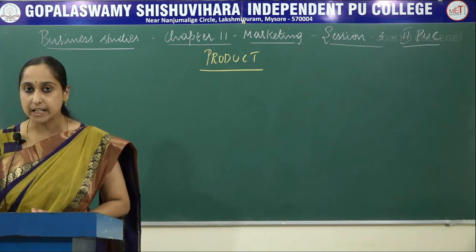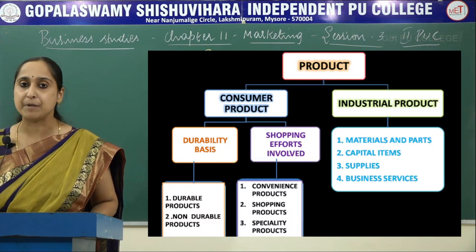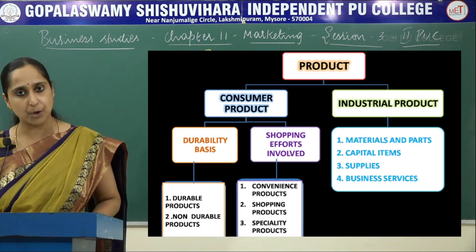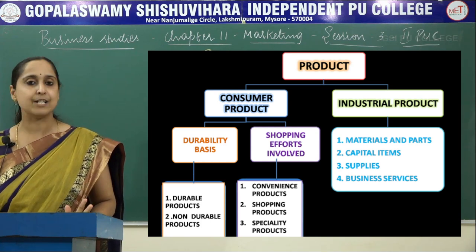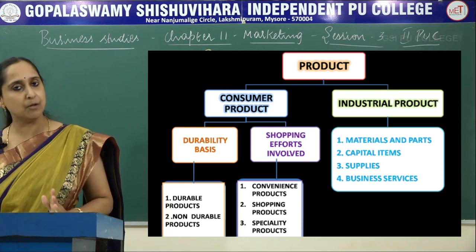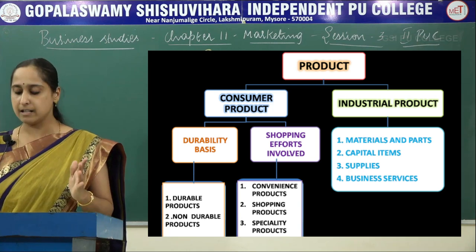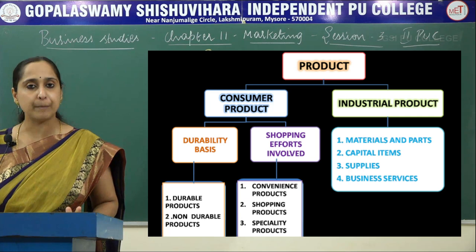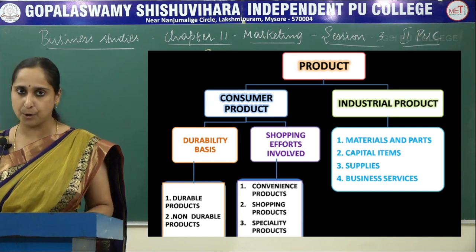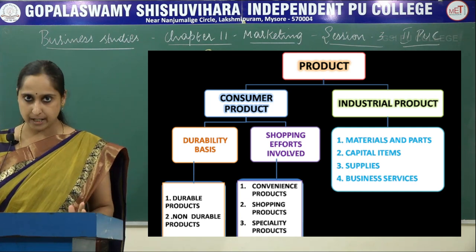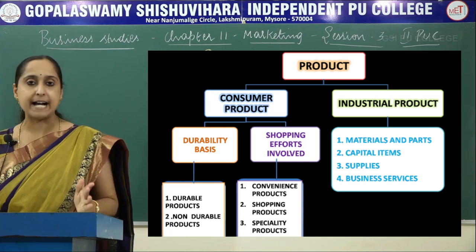Now let us see what are the classifications of products. Products can be classified into consumer product and industrial product. Under consumer product, you can see on the basis of durability and on the basis of shopping efforts involved. Under durability: durable, non-durable and services. On the basis of shopping efforts involved: convenience product, shopping product and specialty product. Under industrial product, it is further classified into materials and parts, capital items, and supplies and business service.